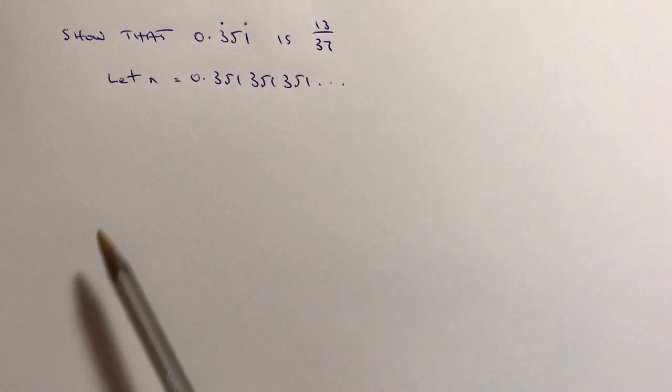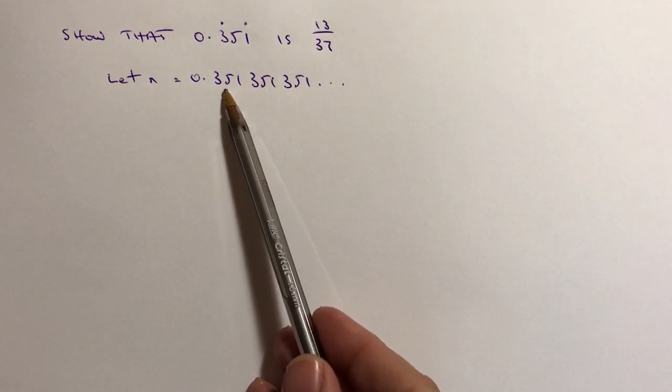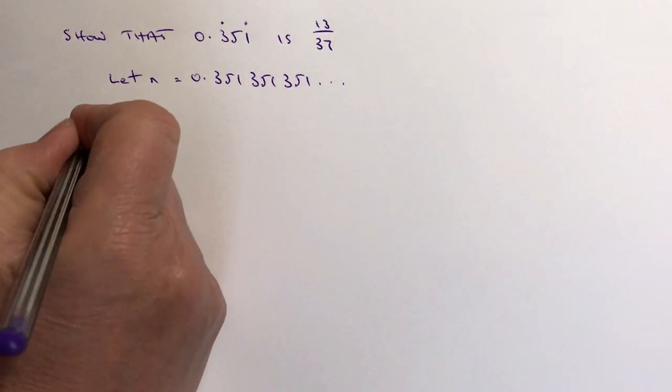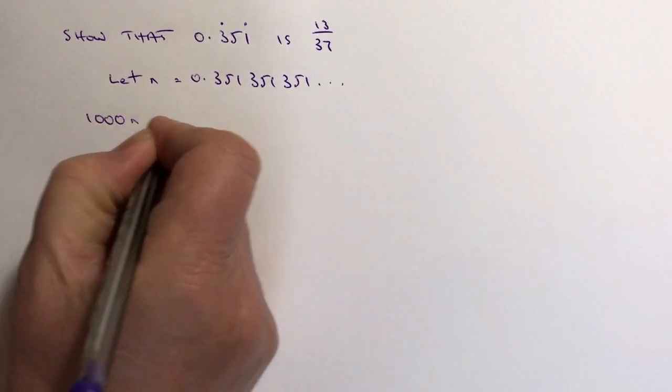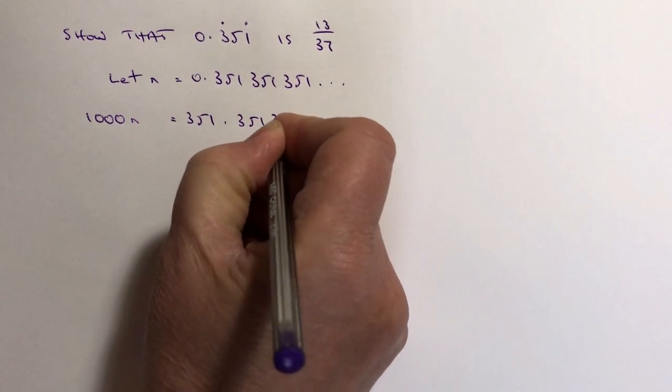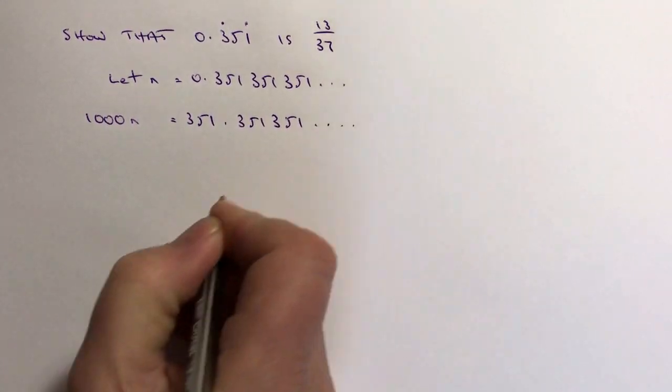If you're not sure about all of those, have a go. Try multiplying this by 10 and see if you can find a way to get rid of the recurring, and then again by 100. With 1000 n, we end up with 351.351 351 and so on.